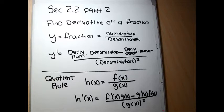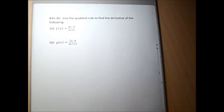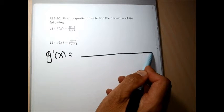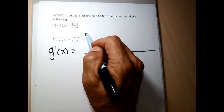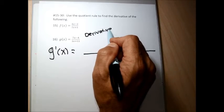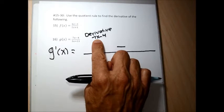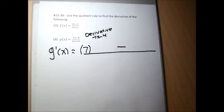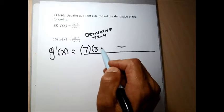Now I'm going to apply this rule to some homework problems. For problem 16, I write g prime of x equals a fraction with a minus sign. The first thing I need is the derivative of the numerator, 7x minus 4. The derivative of 7x is 7 and the derivative of minus 4 is 0, so the derivative of 7x minus 4 is just 7. I write that first in the numerator, then next to it the denominator as given: 7x plus 11.